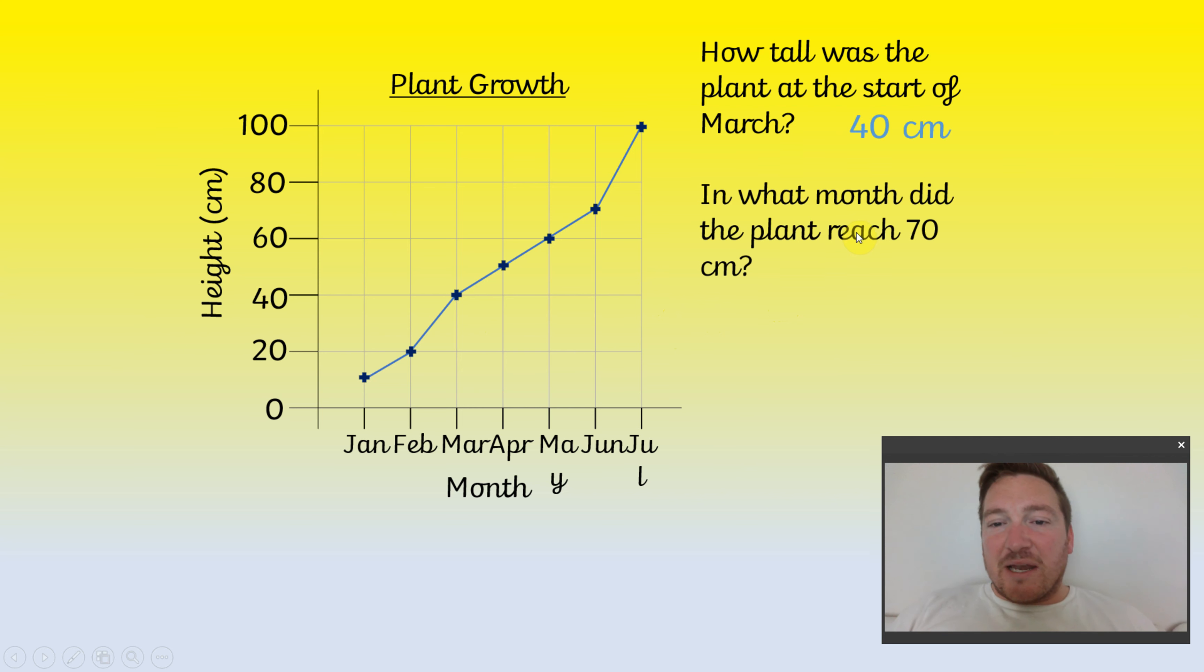Okay, in what month did the plant reach 70 centimeters? So this time we're going to look for the value of 70, track across and then check the month going down. So if you put June you'd be correct.